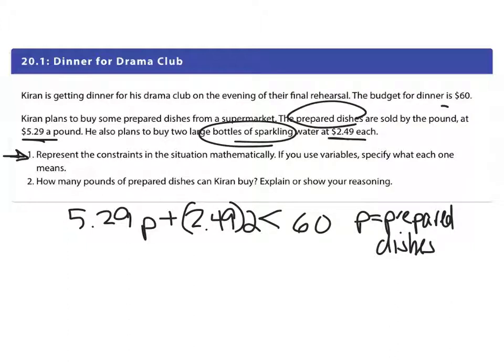So there is an inequality and we'd say P is prepared dishes. How many pounds of prepared dishes can Karen buy? Explain or show your reasoning. Well, I'm gonna go ahead and make this an equation and multiply that which is $4.98 and find what P can equal.